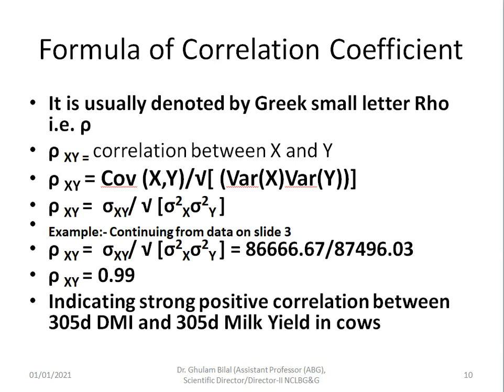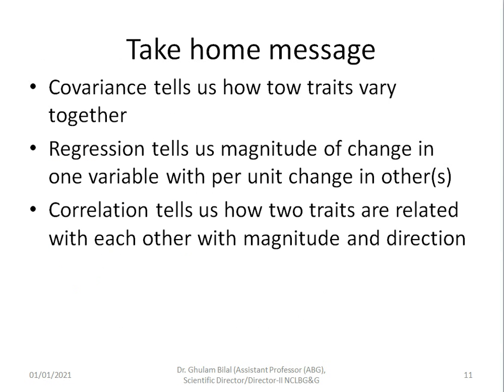Strong positive correlation means the traits are positively related; negative correlation means they are negatively related. As a take-home message: covariance tells us how two traits vary together; regression tells us the magnitude of change in one variable per unit change in another; and correlation tells us how two traits are related — both magnitude and direction. A positive sign means positively correlated; a negative sign means negatively correlated; and the magnitude tells the severity of the relationship. Thank you very much for your attention. If you have any questions, you can contact me.